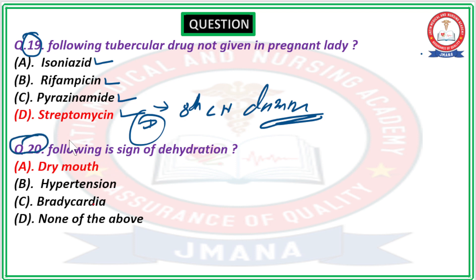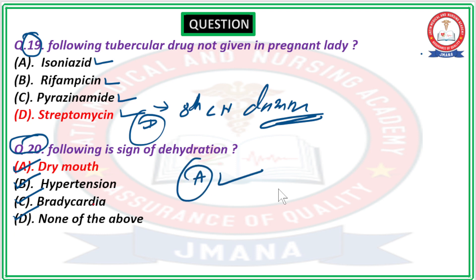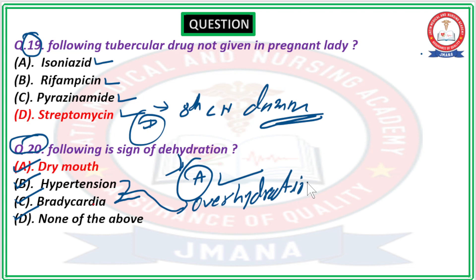Question number 20: What are the signs of dehydration? Option A — dry mouth; Option B — hypertension; Option C — bradycardia; Option D — none of the above. The correct answer is Option A — dry mouth, as it is a sign of dehydration. Hypertension and bradycardia are both seen in overhydration, not dehydration.